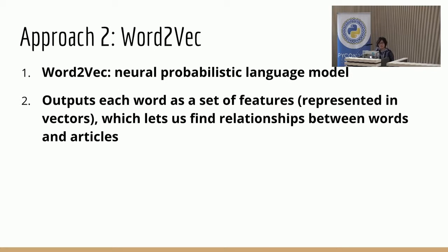Word2Vec is a neural probabilistic language model. What it does is it outputs each word as a set of features, represented as vectors, and it lets us find the relationships between words and articles. The classic example is you can generate a word vector for the word 'king', subtract the vector for 'man', add the vector for 'woman', and you'll get back the word vector for 'queen'. It's a cool way of representing relationships between words.